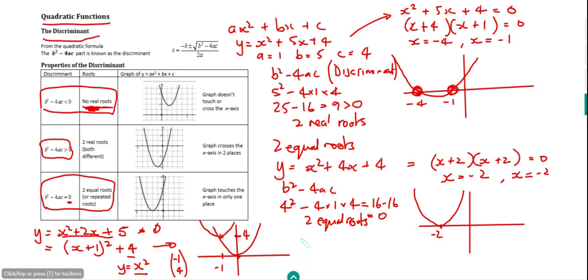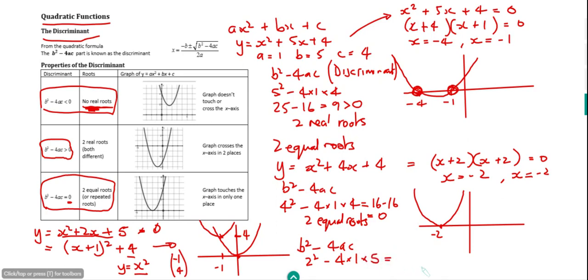Checking with the discriminant — b squared minus 4ac — where b is 2: we get 2 squared minus 4 times 1 times 5, which is 4 minus 20, giving minus 16. Since that's less than 0, there are no real roots.